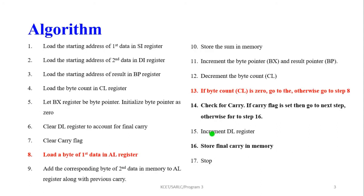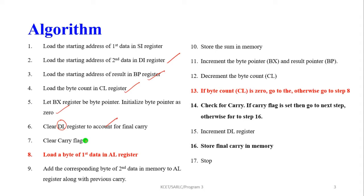Now we move to the algorithm. First, load the starting address of the first data in the SI register. Next, load the starting address of the second data in the DI register. Then load the starting address of the result in the BP (base pointer) register. Load the byte count in the CL register. Let BX register be the byte pointer and initialize it to zero. Clear the DL register to account for the final carry.